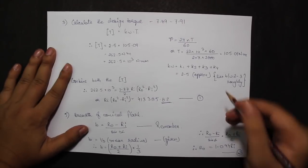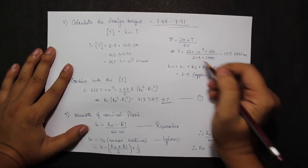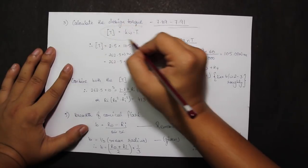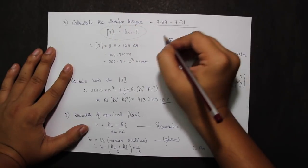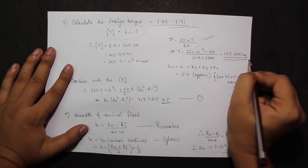Next I have to calculate the design torque from pages 7.89 to 7.91. My design torque is kW into t. T can be found out by this formula: 2 pi nt divided by 60. So t comes out to be 105.09 Nm.